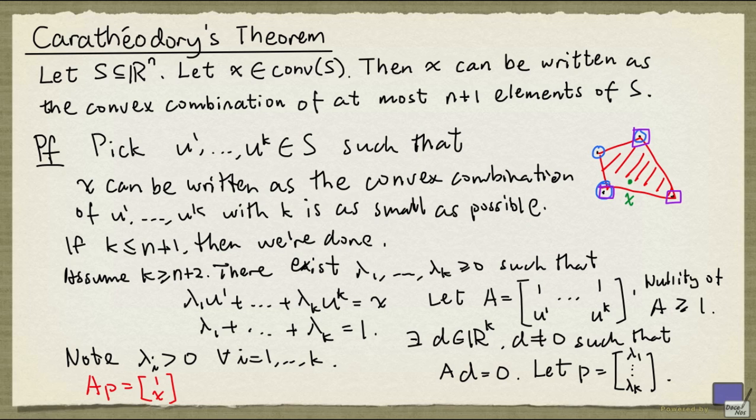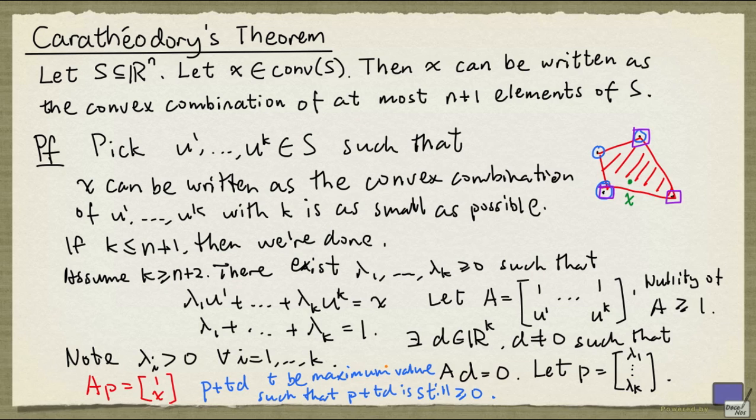Now observe that since d is not identically 0, d must have at least one negative entry. Because in the left hand side here, the first component is the sum of all d's, and on the right hand side it says it has to be 0. So if we look at P plus t times d, there will be a limit on how large t can be, in order for the components to remain non-negative.